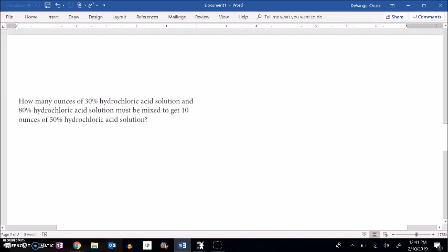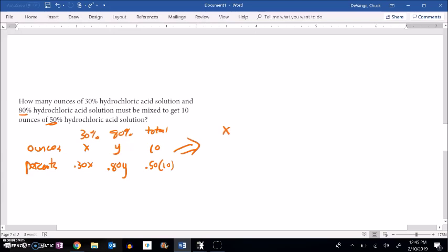Let's do another one. How many ounces of a 30% hydrochloric acid solution and an 80% hydrochloric acid solution must be mixed to get 10 ounces of a 50% solution? So we have this 30% solution, we have an 80% solution. We don't know how many ounces there are in each of them. We know we want the total to be 10. We don't know how much is here or there. We need to figure that out. But we do know that once we mix them together, we want this to be 50%. So notice it's 50% of the total.